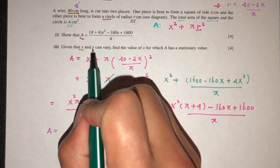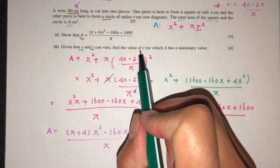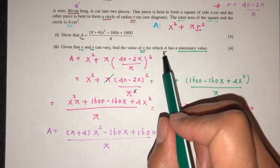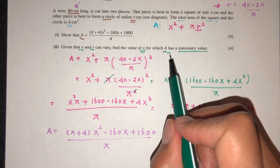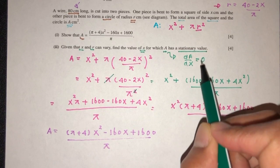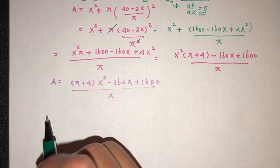Now for part 2, given that x and r can vary, we have to find the value of x when A has a stationary value. Now we know that when A has a stationary value, we have to think of dA/dx have to be 0. Okay, so let's find that out.